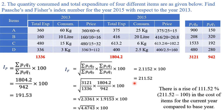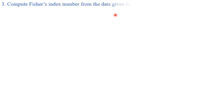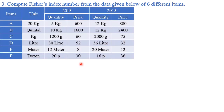You just need to remember the formulas — if you do, it is very easy. Third question: compute Fisher's index number from the data given for six different items A, B, C, D, E, F. Their units are: 20 kg, quintal, kg, liter, meter, and dozen. Whenever these kinds of units are given, we may need to convert prices or quantities according to the units, so we need to recreate the table.